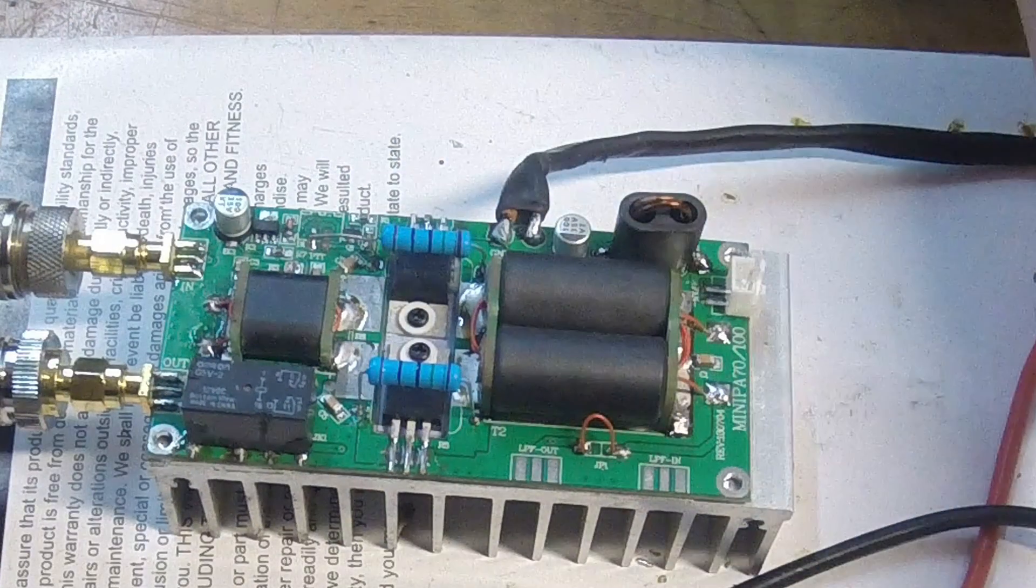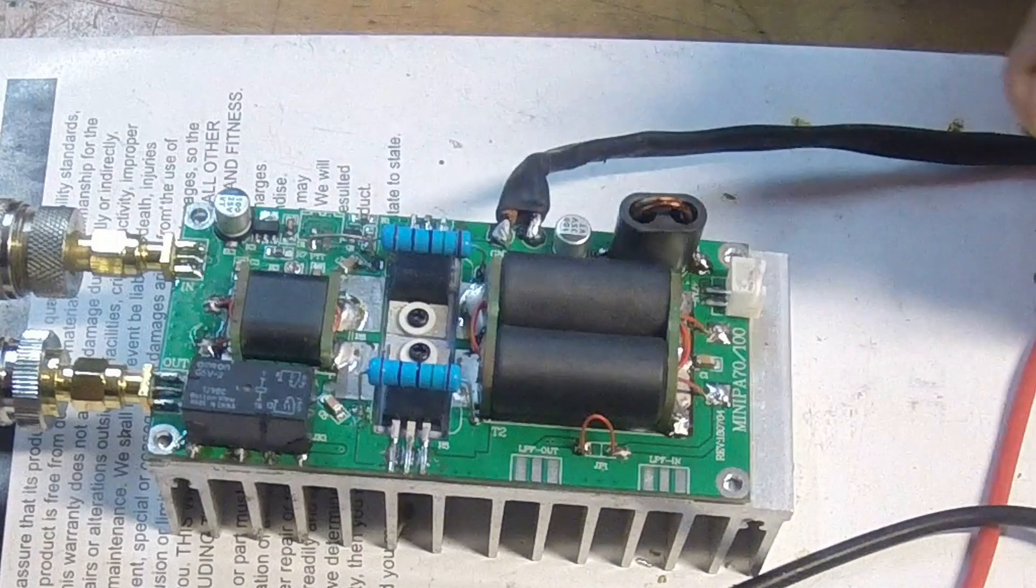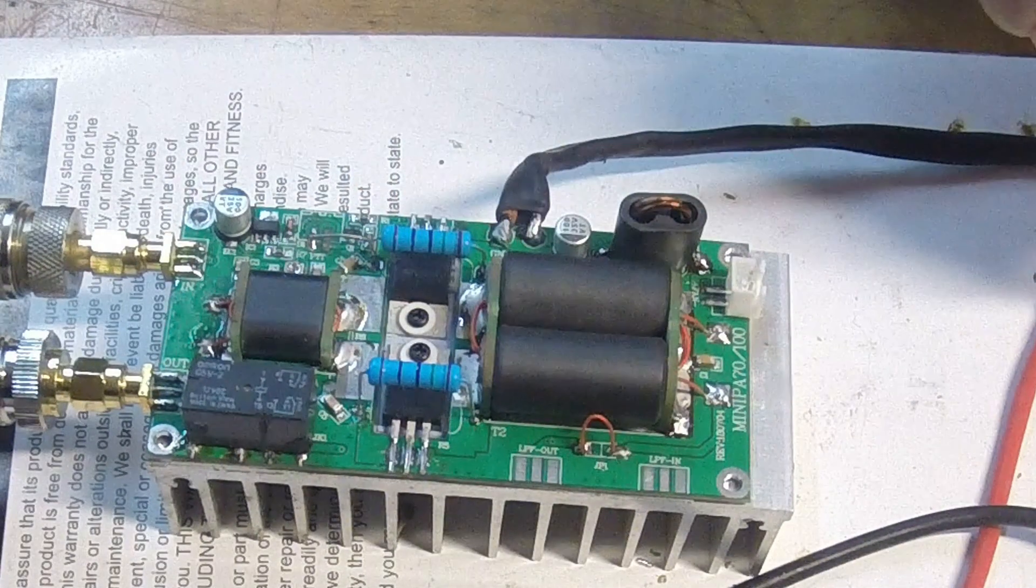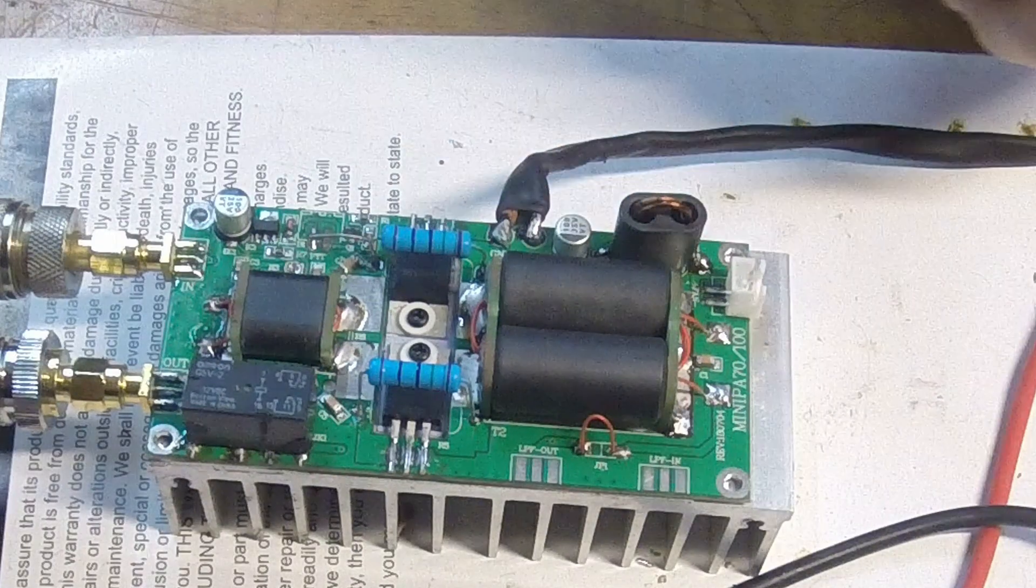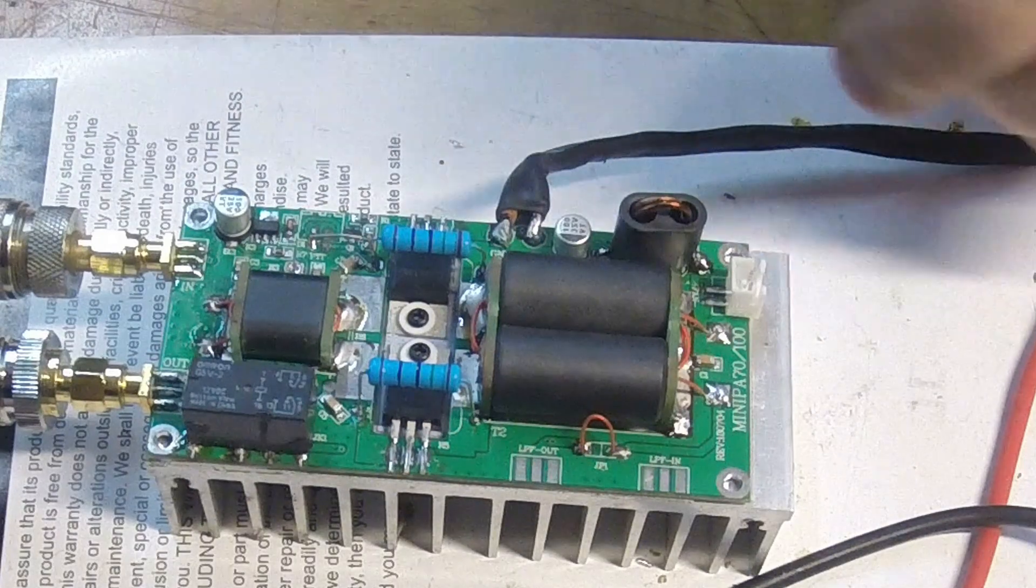I've got it set at 13.5 volts. She's at idle right now. Pulls a little bit under one amp at idle, which is about where you want it. I actually have the bias setting at 3.2 volts right now.